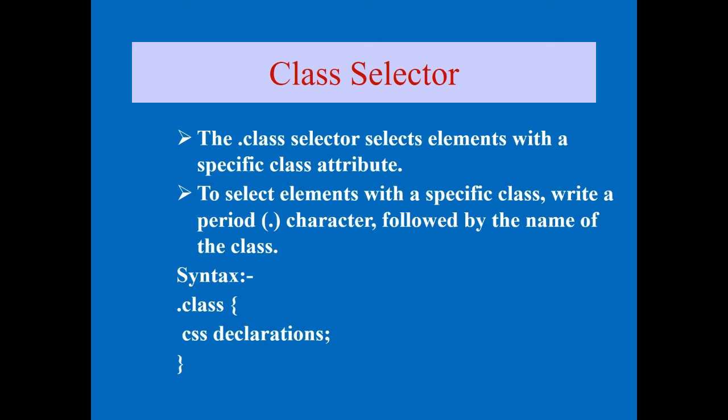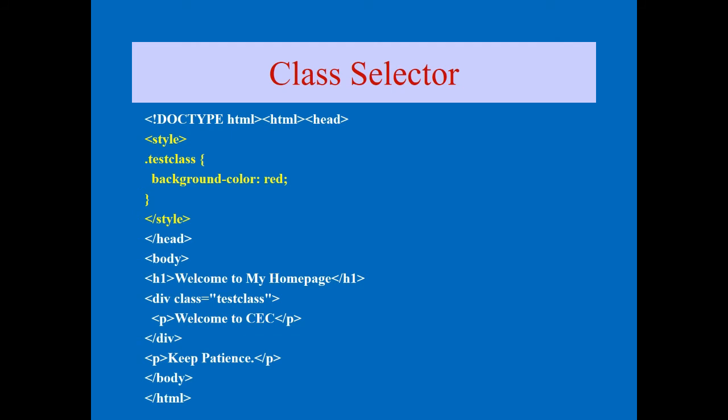Keep in mind: a class can be called any number of times on a page. The syntax is: dot symbol, class name, curly bracket, then the CSS declarations — property and value — terminated with semicolons, then close the curly bracket. We'll see a small example for class selectors now.